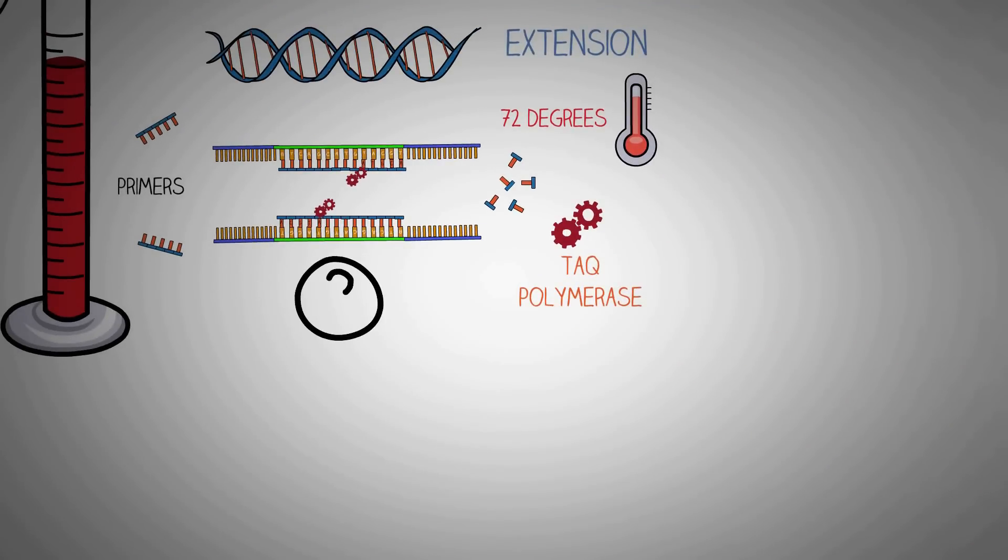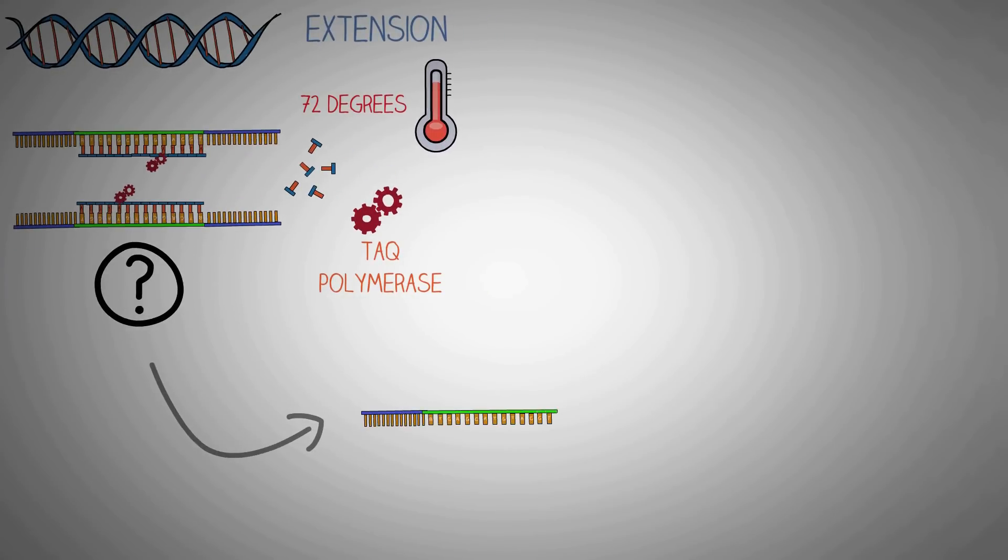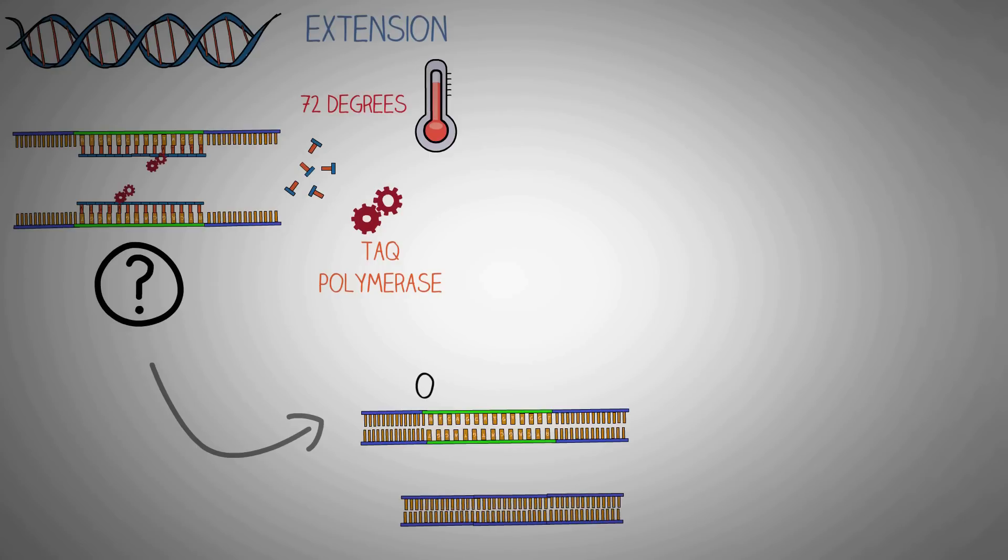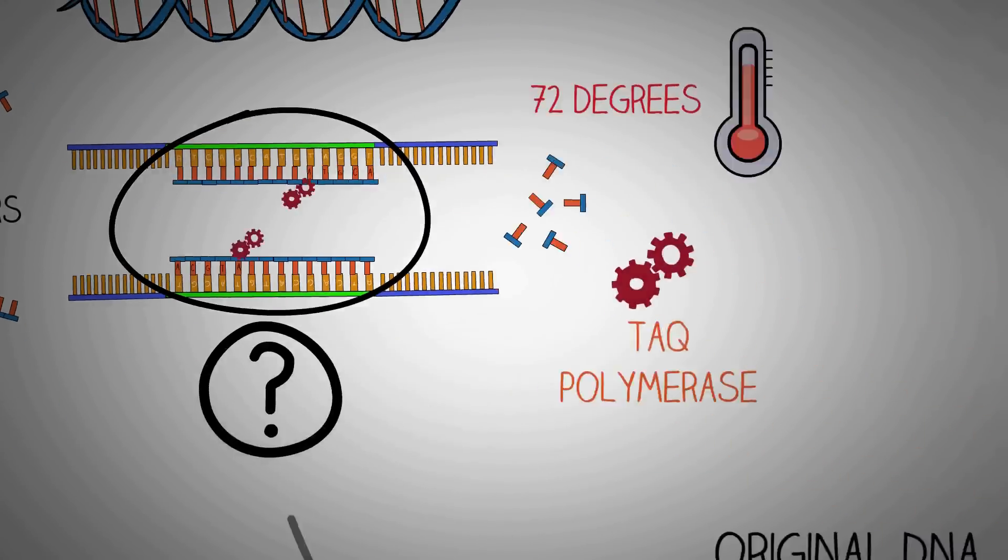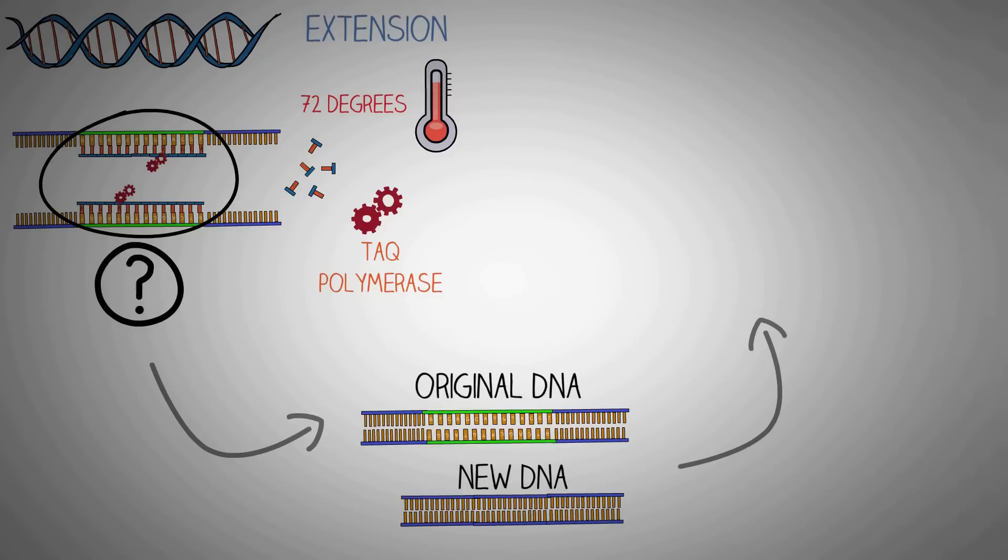So what was the result of this single cycle of heating and cooling and then heating again? You can see that from one DNA fragment we got two new double-stranded DNAs. One is the original parent DNA and the other one is a new DNA formed by the Taq polymerase.